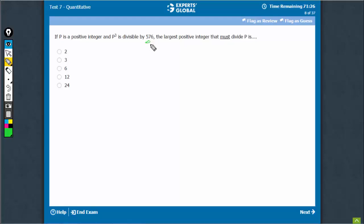P³ is divisible by 576. So, 576 needs to be factorized. 576 is 64 into 9.